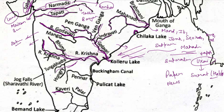Next is the Kaveri river, which flows through Karnataka, Tamil Nadu, and Puducherry. Shivasamudram Waterfalls is located on the Kaveri river, and the first hydroelectric plant in Asia was established at Shivasamudram Falls on the Kaveri. Throughout the year there is water in Kaveri, so it is also called a perennial river. Godavari experiences flooding but Kaveri flows perennially.